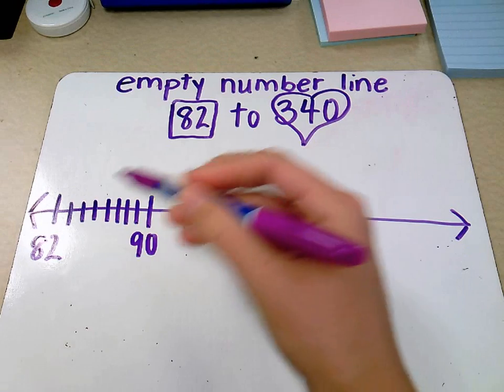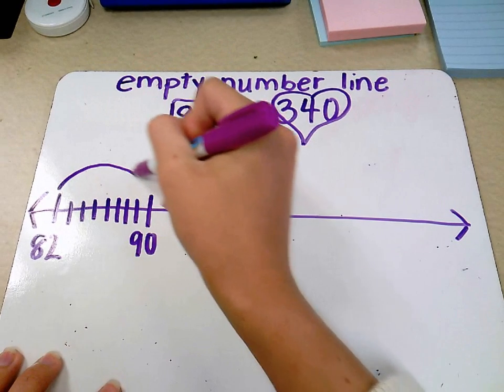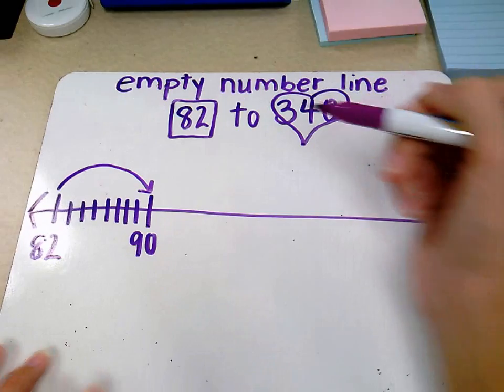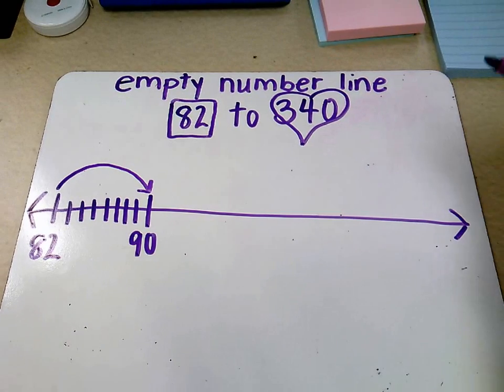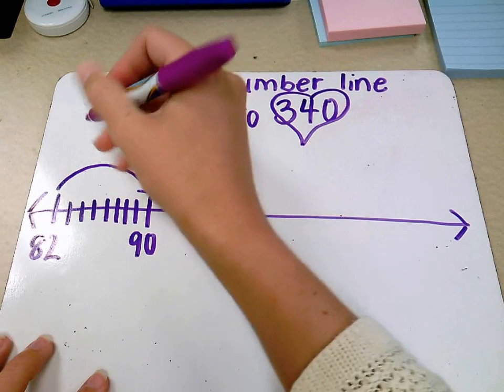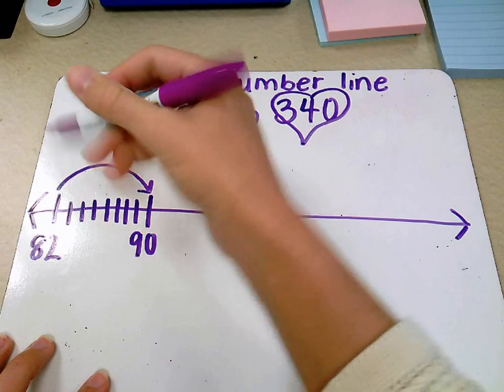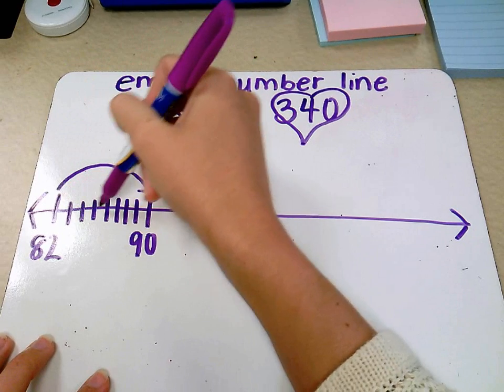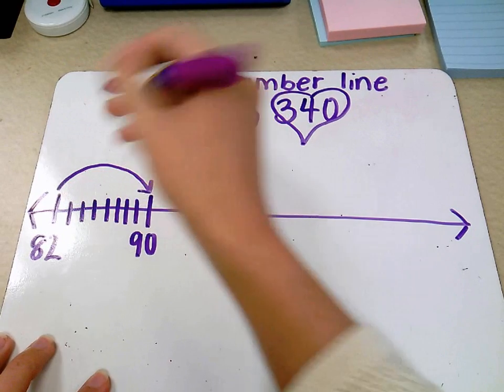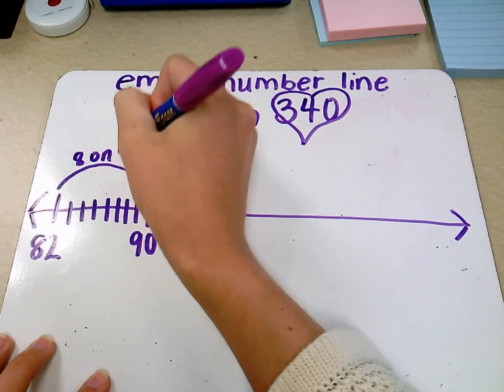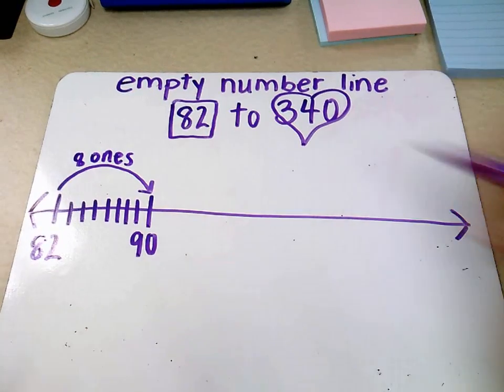We also need to label what unit we used to get to this benchmark. Keeping track of what we're using, staying organized, and writing down in unit form what we did. So we added how many ones? One, two, three, four, five, six, seven, eight ones. And we'll write it up here in unit form on top of our arc.